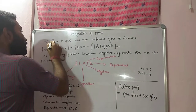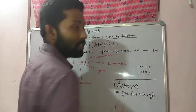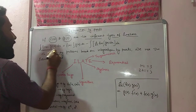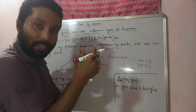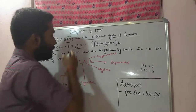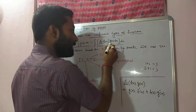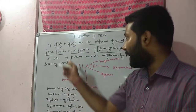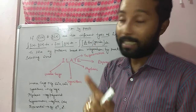Integration by parts: if f(x) and g(x) are two different types of functions, then the integration of f(x) into g(x) dx is equal to f(x) into the integration of g(x) dx, minus the integration of d/dx of f(x) times the integration of g(x) dx, whole into dx. This is the main formula of integration by parts.